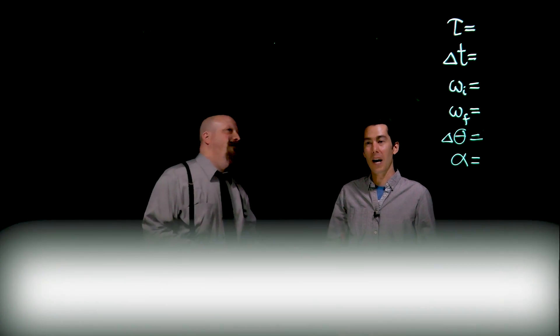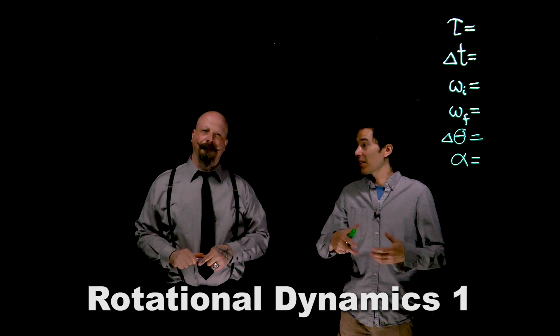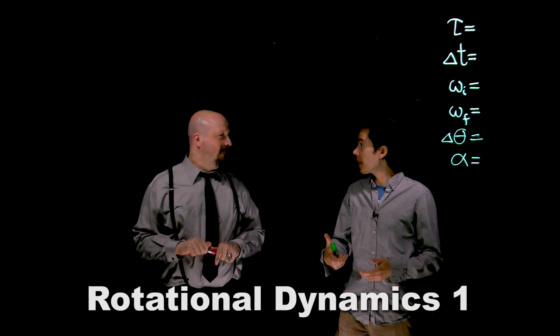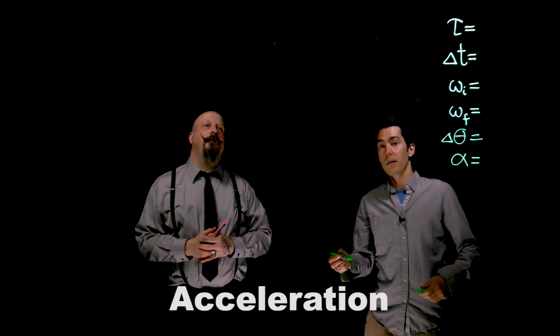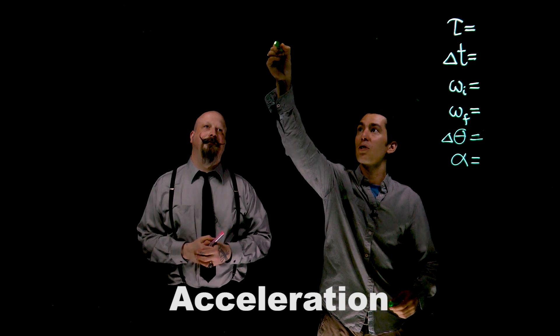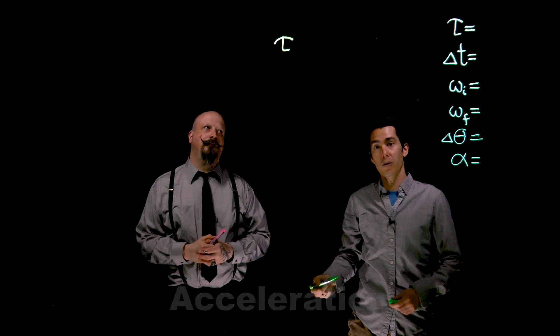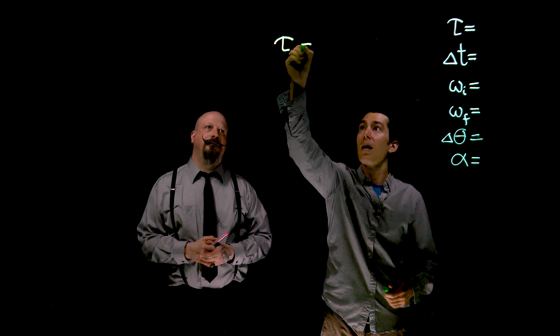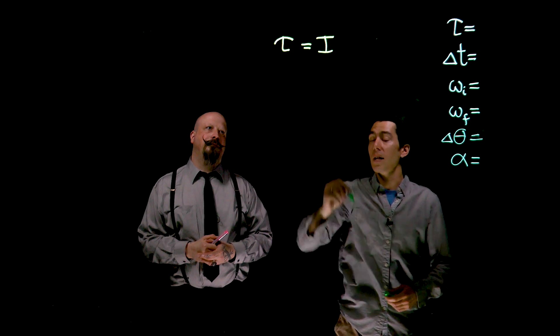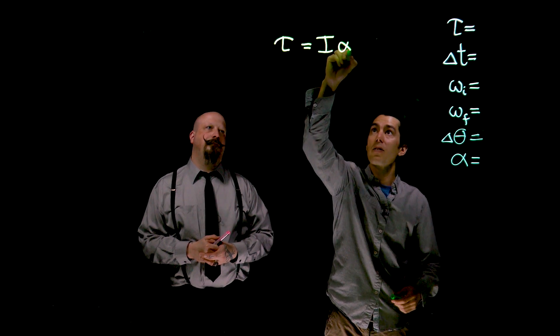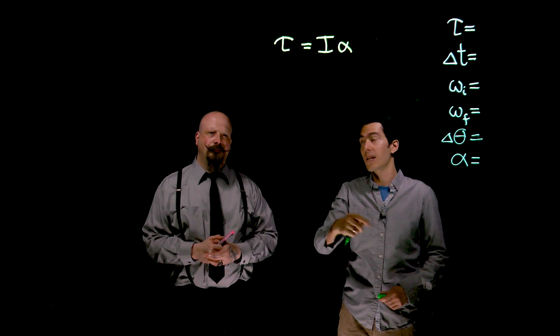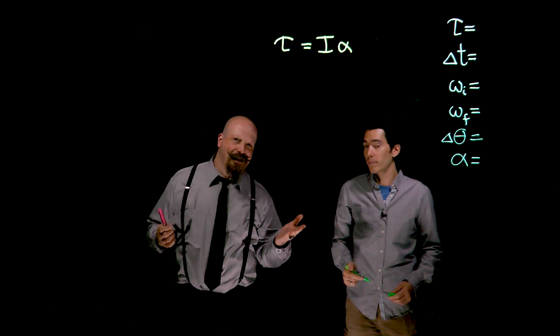We've been talking a lot about this new quantity, moment of inertia, and I thought it'd be good to do an example where we calculate that for a particular thing. One example of where moment of inertia comes in is that if you apply a torque to an object to get it to rotate, the moment of inertia of the object reflects how much angular acceleration it's going to have in response to that torque. So let's take a look at a classic problem.